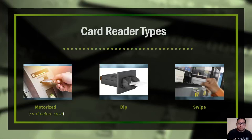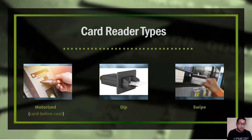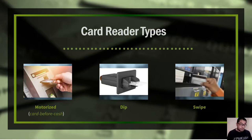Now let's talk about card reader types. We have three types: motorized, dip, and swipe. The motorized is also called card-before-cash, because you insert the card and it stays in the ATM carrier until the transaction ends, after which the card is returned to you. The dip reader just requires a quick dip of the card without leaving it in the carrier. The swipe reads the magnetic stripe of the card.